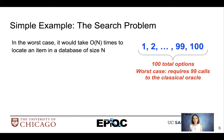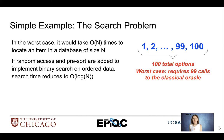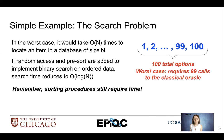In the worst case, we would have to take O(N) time to locate an item within a database of size N, with N being the number of items we're searching through. If random access and pre-sort were added to implement a binary search on ordered data, our search time would reduce, but these sorting procedures don't come for free — they still require some time to implement.